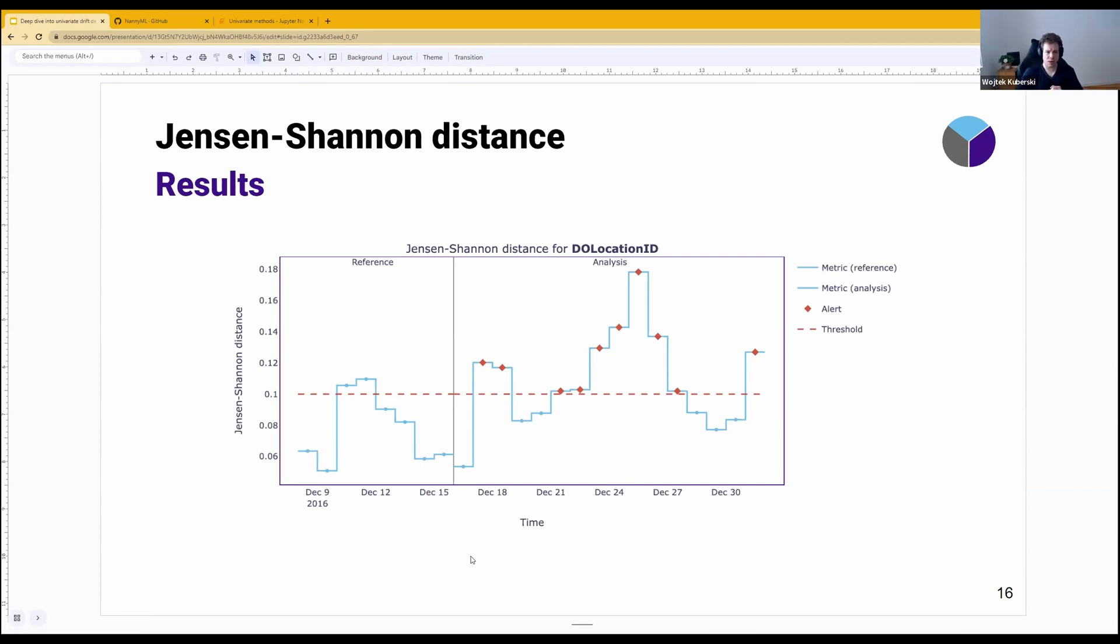You can, of course, change this threshold to anything you want, and you can base this threshold on two things. You can either set a constant threshold, such as 0.1, or you can base it on the standard deviation or variance of the measure in the reference data. In that way, you can make a dynamic threshold that's going to change based on your reference data.